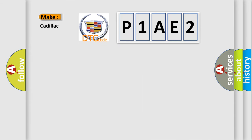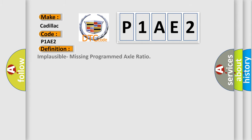So, what does the diagnostic trouble code P1AE2 interpret specifically for Cadillac car manufacturers? The basic definition is: Implausible missing programmed axle ratio. And now this is a short description of this DTC code.